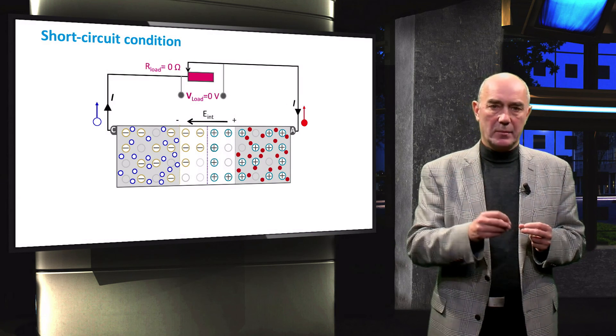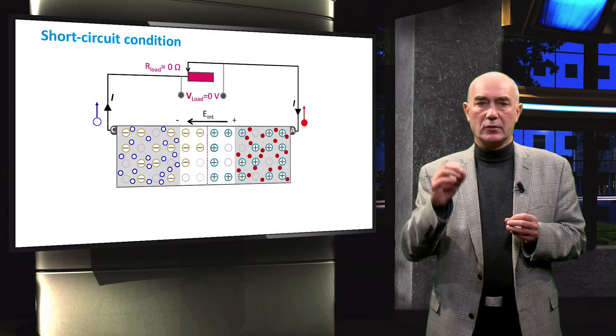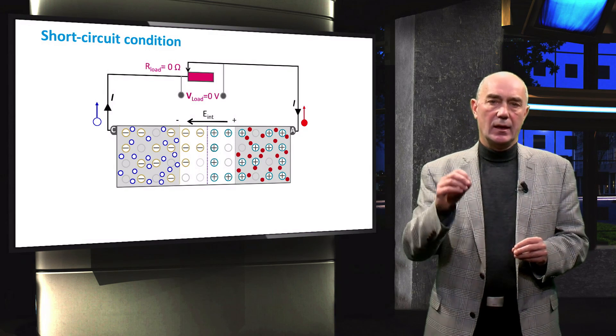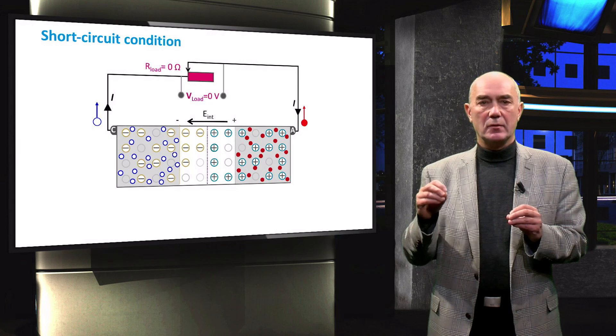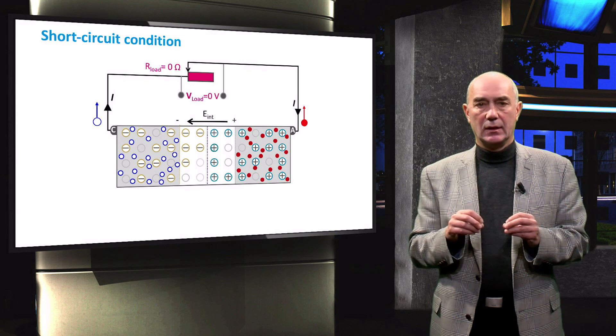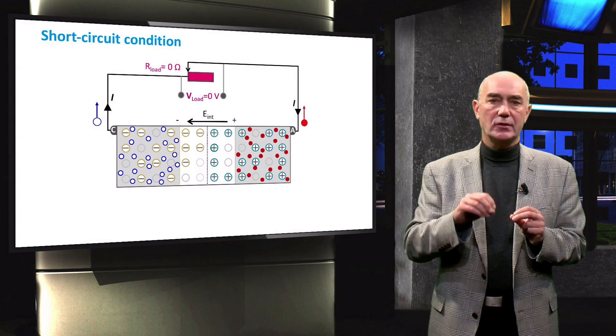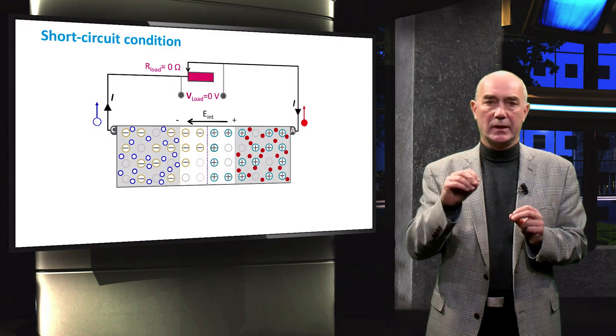When we connect the P-type and N-type regions with a good conductor, we create a short-circuit condition. In this case, electrons move from the N-type region via the external circuit to the P-type region — flowing from the region of higher energy to lower energy. So now you understand what happens when a PN junction is under illumination. In the following lecture, we will examine the band diagrams and electrostatic potential of a PN junction under illumination at different points of operation.